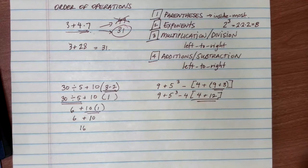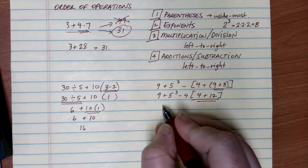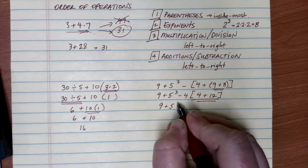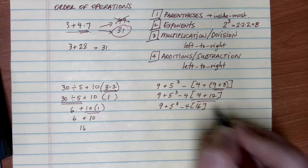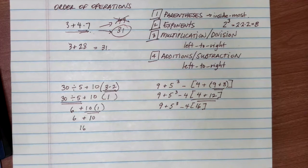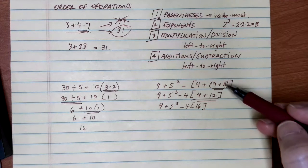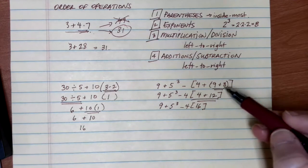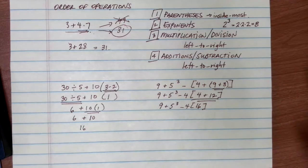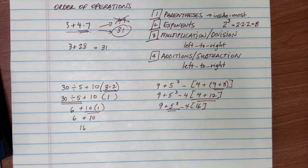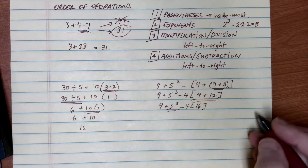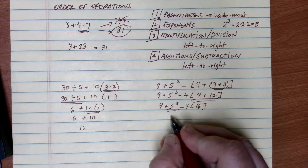We're not done with parentheses yet, so we still do the 4 plus 12 inside the brackets: 4 plus 12 is 16. Copying everything down: 9 plus 5 to the third minus 4 times 16. Now we've simplified all parentheses. The next step is exponents — we have 5 to the third power. Remember, 5 to the third is 5 times 5 times 5, which equals 125.